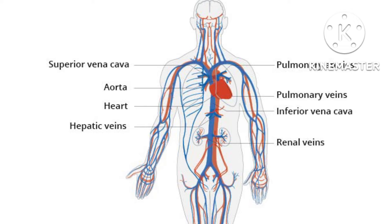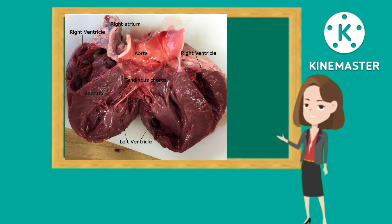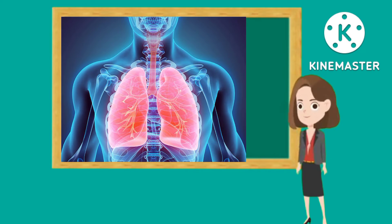The heart has four chambers. The right atrium receives blood from the veins and pumps it to the right ventricle. The right ventricle receives blood from the right atrium and pumps it to the lungs, where it is loaded with oxygen.